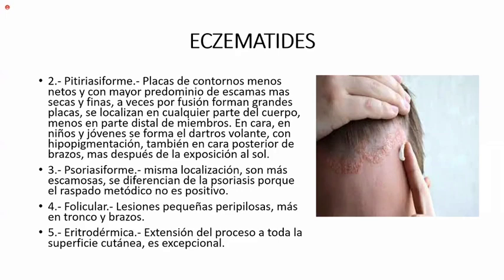Cuatro, la forma folicular. Son lesiones pequeñas, peripilosas, más en tronco y brazos. Y cinco, la eritrodérmica, que está bien extendida, comprometiendo toda la superficie cutánea. Esta es excepcional: todo el cuerpo con escamas es excepcional.